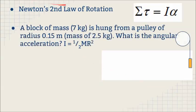This Newton's second law of rotation, sigma tau equals I alpha, is useful in problems like this. We have a block of mass, the hanging block of seven kilograms, hung from a pulley. The pulley has a radius of 0.15 meters and a mass of 2.5 kilograms. We're going to try to find the angular acceleration if I equals one half MR squared. So see they're giving us the rotational inertia there.